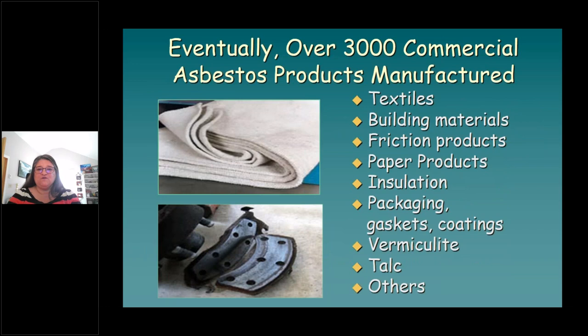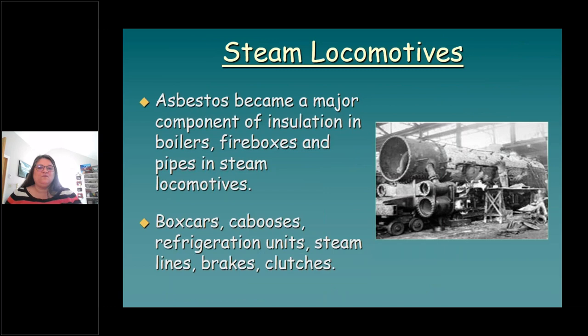By the end of the Industrial Revolution, over 3,000 different asbestos-containing products were being produced, including textile products such as fire gloves and aprons, friction devices such as clutches and brake pads, paper products, gaskets, pipe wrap, insulation, building construction materials like siding and roofing, road construction, concrete additives, and piping. Once the US started producing asbestos, it became a major component of insulation for boilers, fireboxes, and pipes in steam locomotives. Boxcars, cabooses, refrigeration units, and steam water lines were all insulated with asbestos. Even when the industry switched to diesel, many new trains still used asbestos.